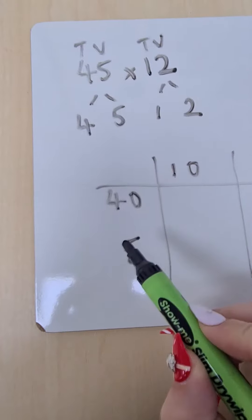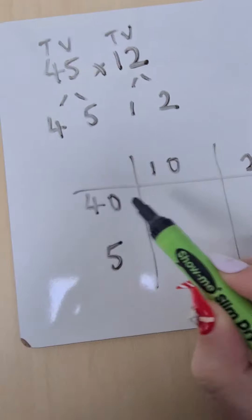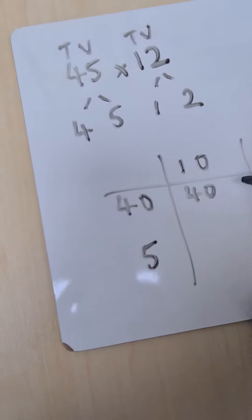So 40 times 10. Lots of the children will very quickly establish that 4 times 10 is 40 and therefore 40 times 10 is 400.